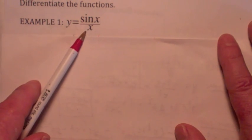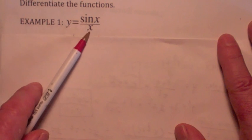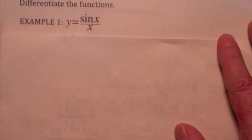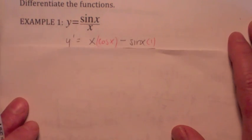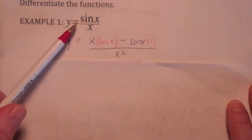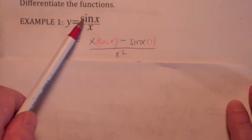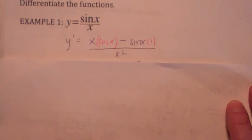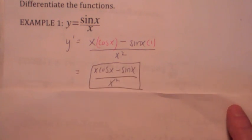You could probably even use the product rule if you move the x up to the top and made it x to the negative 1. But let's go ahead and use the quotient rule here. It says it'll be the bottom times the derivative of the top minus the top times the derivative of the bottom all over the bottom squared. So you can write your final answer as x cosine of x minus sine x over x squared. That's not too bad.